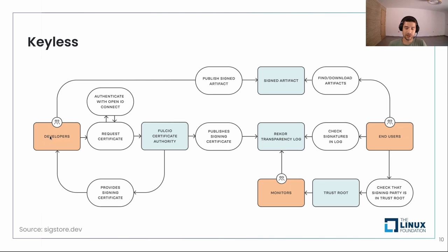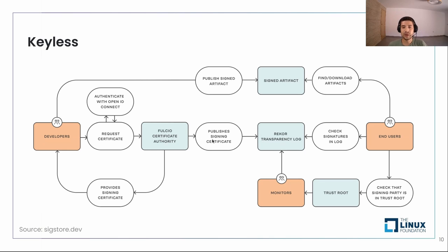Let's start with the developer's workflow. We want to sign an artifact, so the first thing we do is request a certificate from Fulcio. We need to provide an OIDC token, so we authenticate with an OIDC provider, get back a token, and pass it to Fulcio. Fulcio will verify our identity based on this OIDC token, issue a certificate we can use for signing, give us back this certificate, and also publish the certificate to the Rekor transparency log. Now we have our certificate — we sign the artifact and publish the signed artifact to our OCI registry. That's it — our artifact is signed.